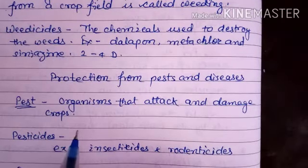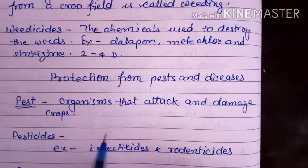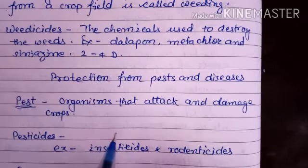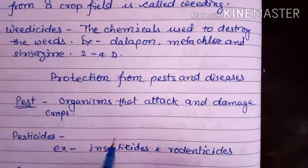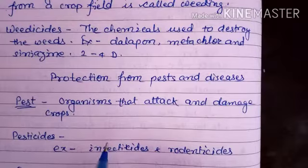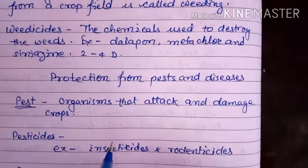This includes insecticides, which are used to kill insects, and rodenticides, which are used to kill rodents. Insecticides are sprayed by hand-operated machines or by low-flying aircraft if the fields are large.